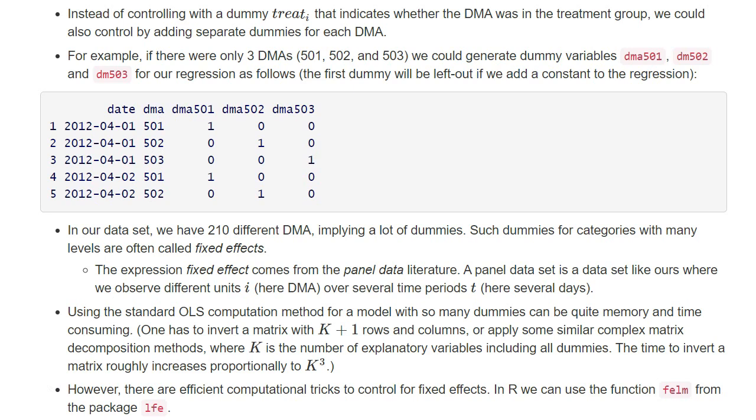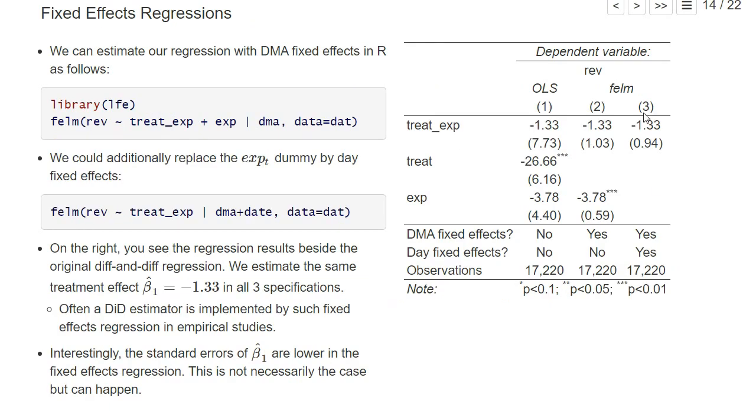Here you see the results of three regressions. The first regression is the one we have run before, where we have this interaction term and add the treatment in the experimental period dummy.